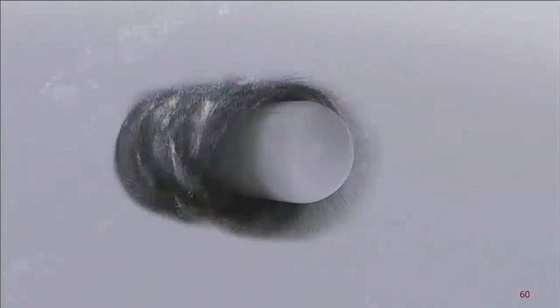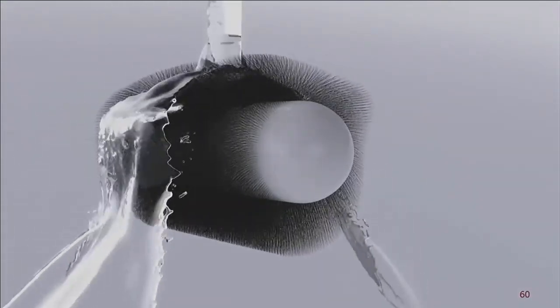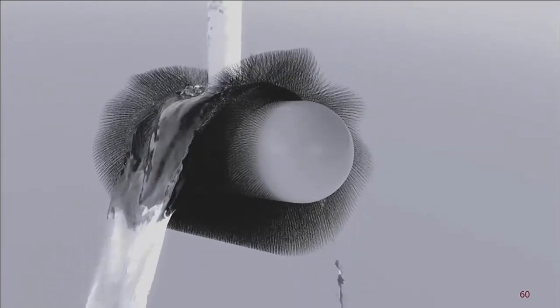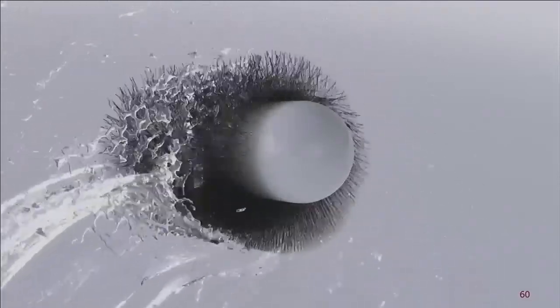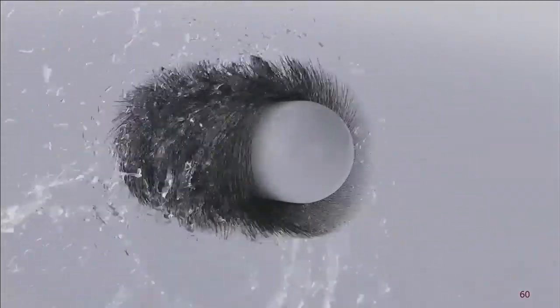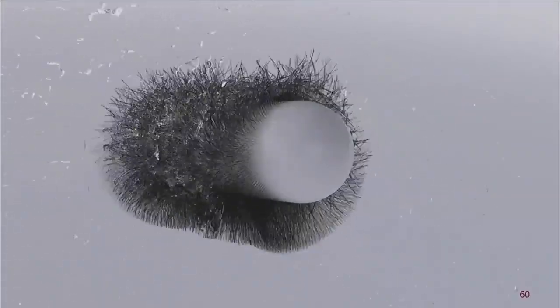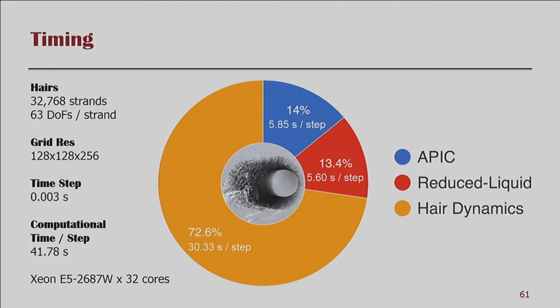Here we show the two-way coupling result, where a furry cylinder mimics mammal-shaking behavior. The timing for this example on a 32-core machine shows an average computational time of 41 seconds per step. More than 70% of the time is spent on hair dynamics including collision detection and resolution, which is the bottleneck of current hair simulation methods.